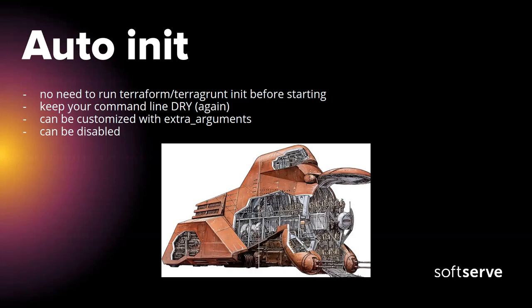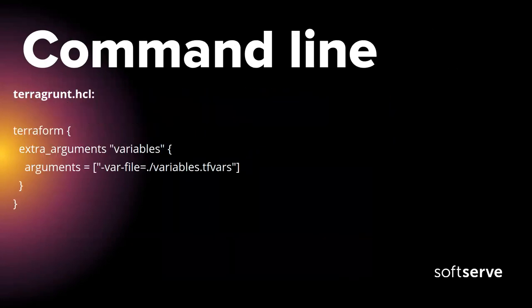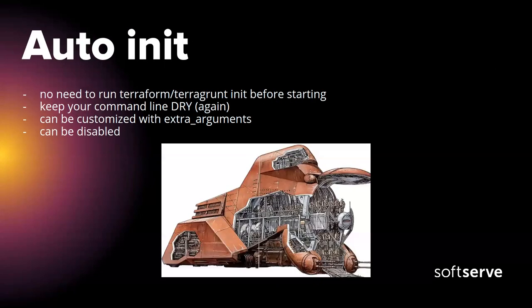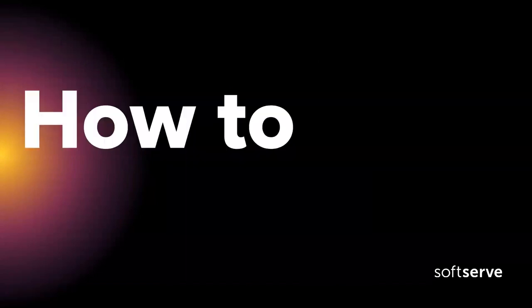Terragrunt also automatically runs init before planning in all folders, so you don't need to run two commands — just one. This can be customized with extra arguments for the init command, and it can be disabled if you don't want to use auto-init in your repo.